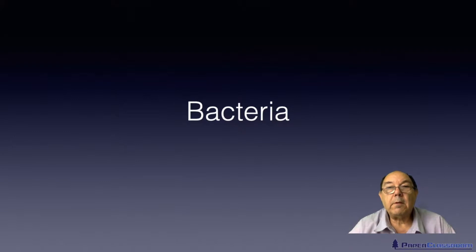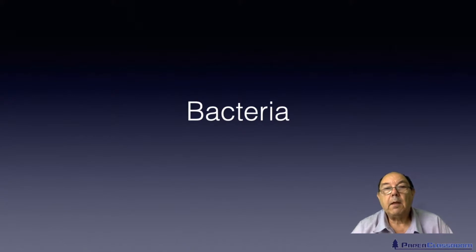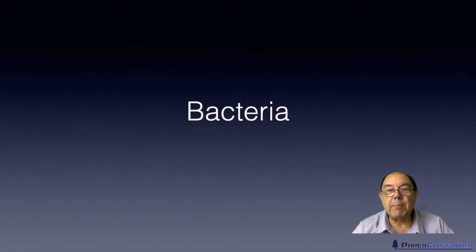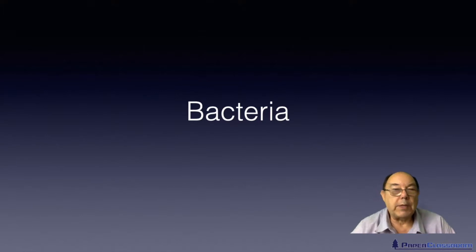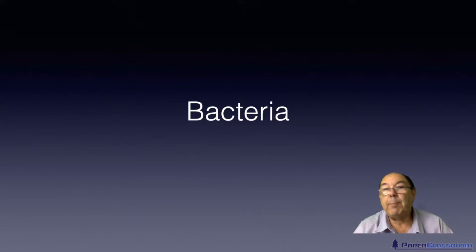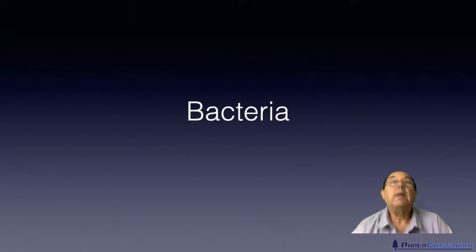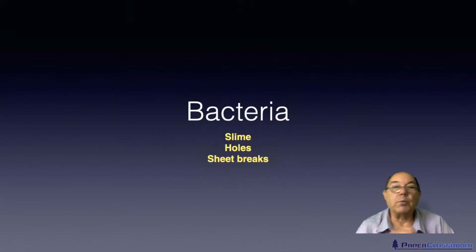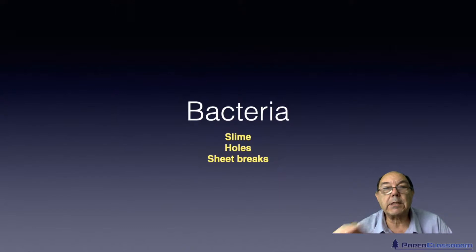Bacteria, promoted by dissolved gases, will cause slime that can be smelly, colourful, and very sticky. That will cause things like slime lumps in the paper, sheet breaks, and holes in the paper. And of course, if you're producing material that's going to be in contact with foodstuffs, it could make somebody ill. The problems caused by bacteria are slime, holes in the sheet, and sheet breaks.